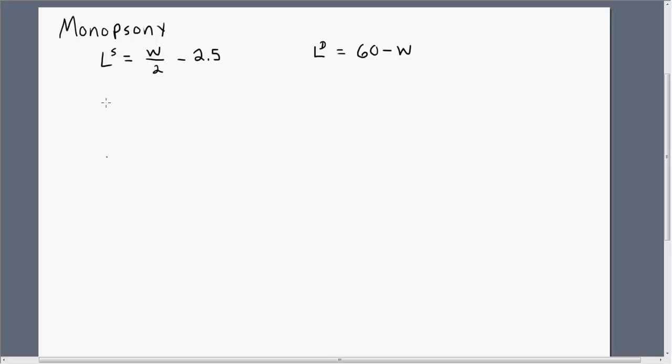Solve for W. So I'm going to take this labor supply equation and solve it for W now. If you do that, you're going to get W equals 5 plus 2L. I'm dropping the superscript S just for simplification. So I took this above equation and just solved it for W.